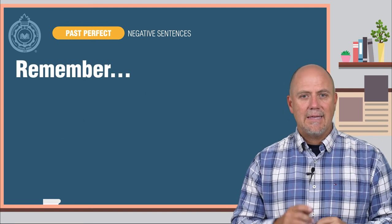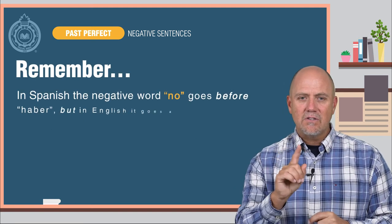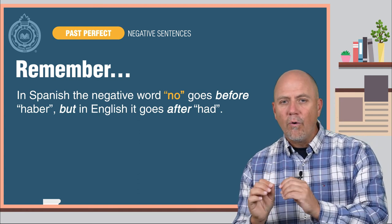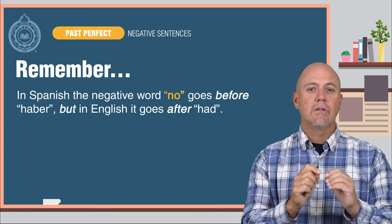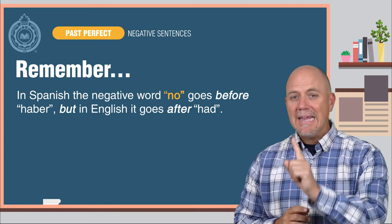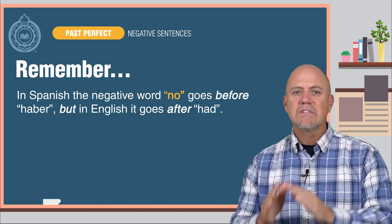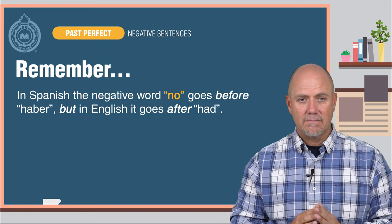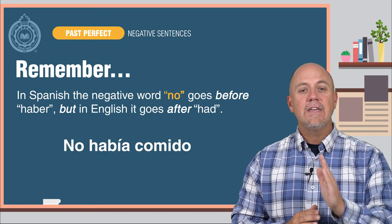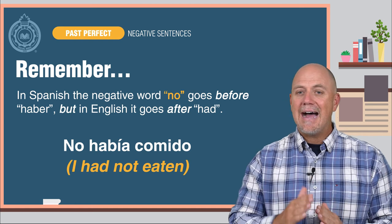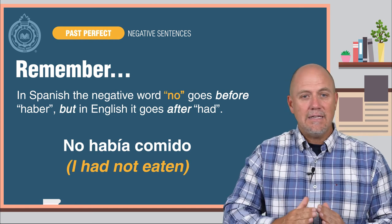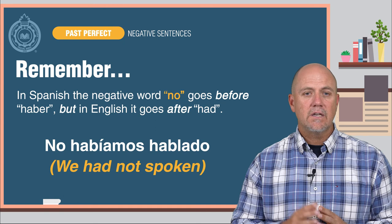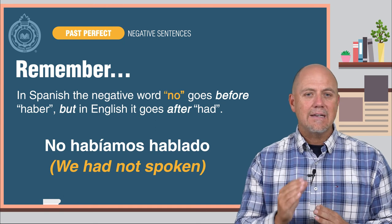Remember, in Spanish the negative word no goes before the auxiliary verb haber, but in English it goes after the auxiliary verb had. No había comido equals I had not eaten. No habíamos hablado is we had not spoken.